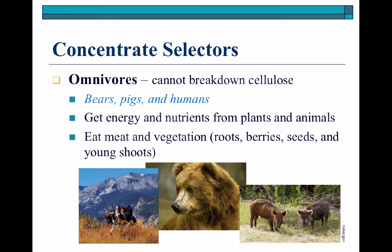Our omnivores are going to be concentrate selectors as well — they are not going to have the ability to break down a lot of cellulose. These again are going to be bears, pigs — feral pigs have become a huge problem on rangeland — and then us as humans as well. These omnivore concentrate selectors are going to get their energy from plants and animals, but they also have the ability to eat preformed nutrients such as protein in the form of meat and very densely packed vegetation.